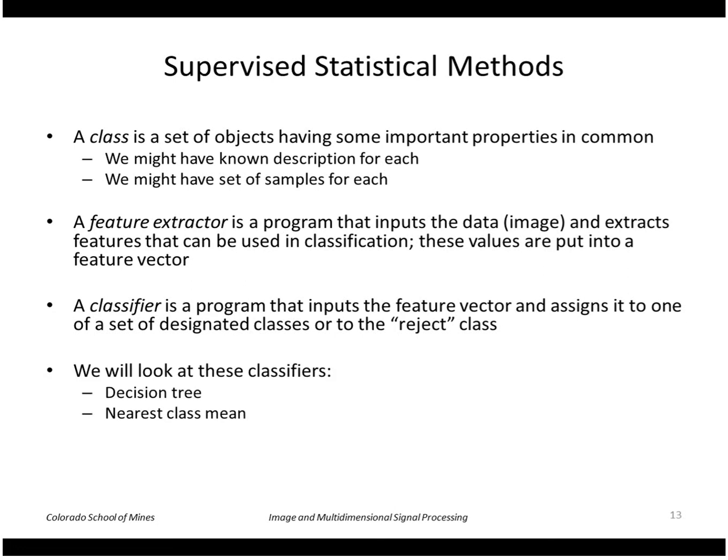So we'll look at two types of supervised classifiers. One is using a decision tree and a very simple one just using the nearest class mean. If you want a more sophisticated classifier though, I highly recommend looking at support vector machines. These are very popular now in machine learning and they're described very well in that book by Bishop.